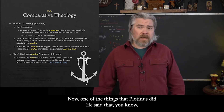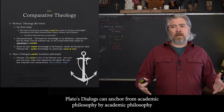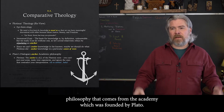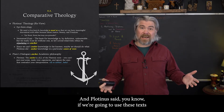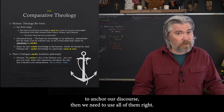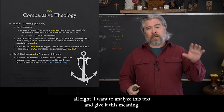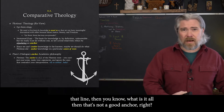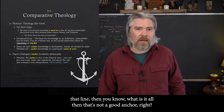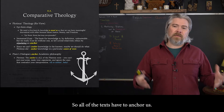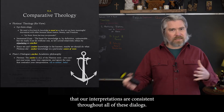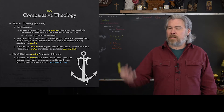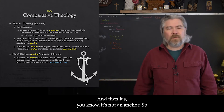Right now we're going along with Plotinus and anchoring our knowledge in these dialogues by Plato. One of the things Plotinus said was that Plato's dialogues can anchor academic philosophy — philosophy that comes from the Academy, which was founded by Plato. And Plotinus said if we're going to use these texts to anchor our discourse, we need to use all of them. You can't just pick and choose. If you interpret one text in a way that contradicts another, that's not a good anchor. All of the texts have to anchor us — our interpretations must be consistent throughout. Otherwise we wind up with cognitive dissonance and the logic breaks down.